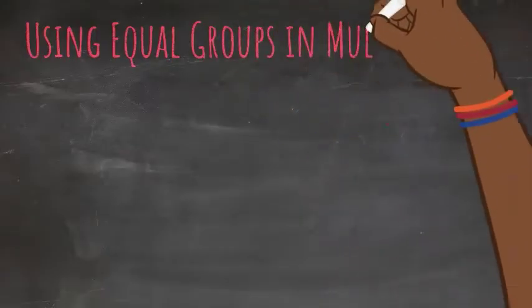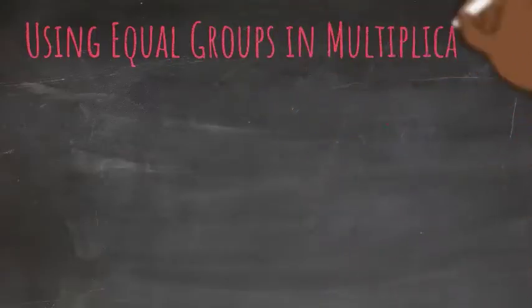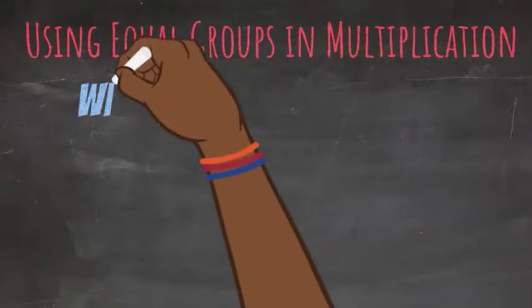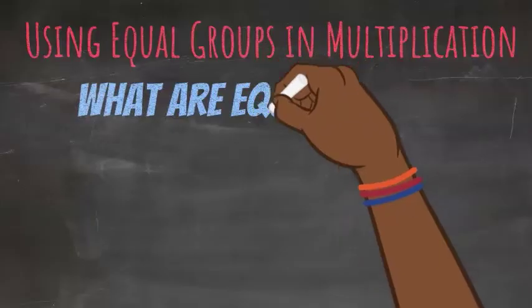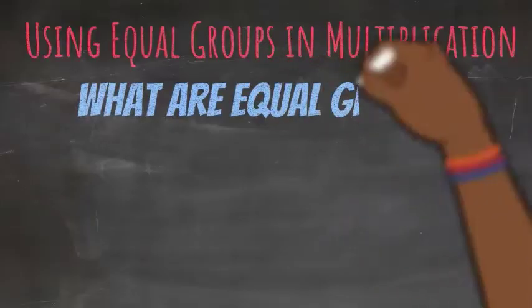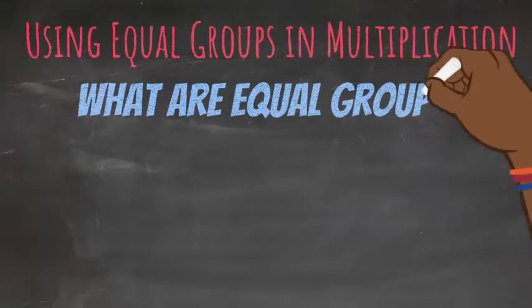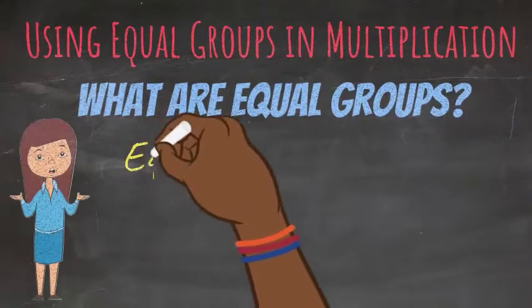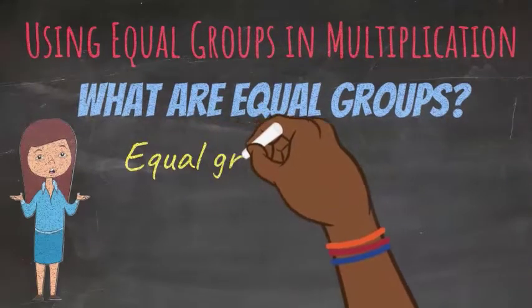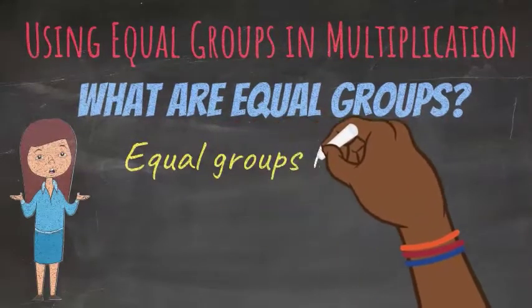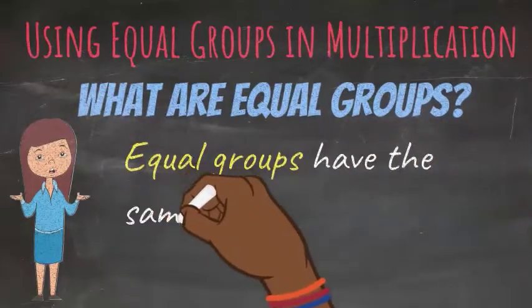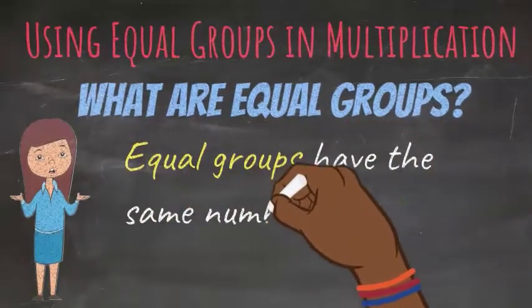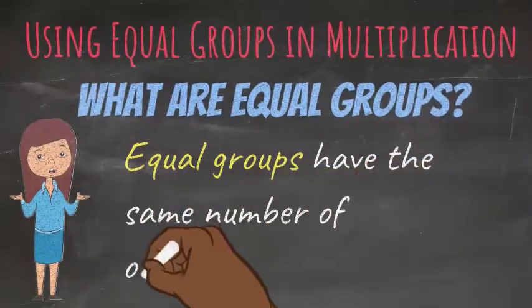Using Equal Groups in Multiplication. What are equal groups? Equal groups have the same number of objects in each group.